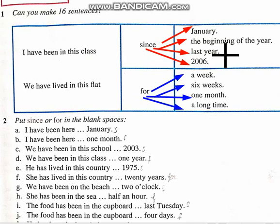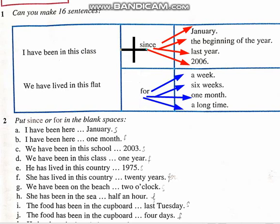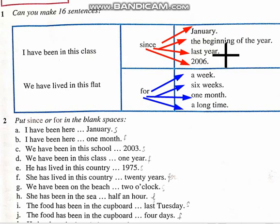Assalamu alaikum, dear students. We are going to start Unit Two. In this lesson, we are going to learn the use of 'since' and 'for'. 'Since' is used for a point of time — as January, the beginning of the year, last year, 2006. For more examples, we can see: four o'clock, three o'clock, or any fixed time on the clock.